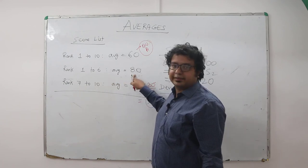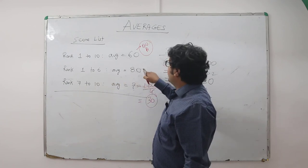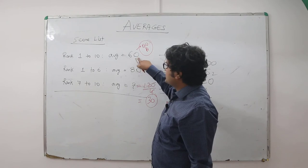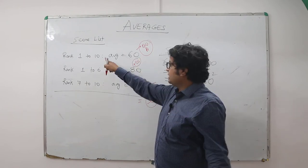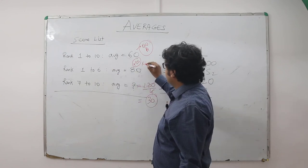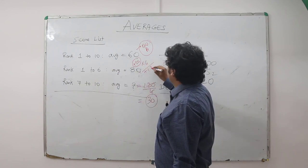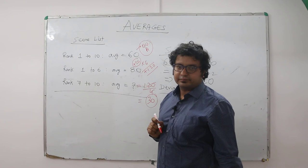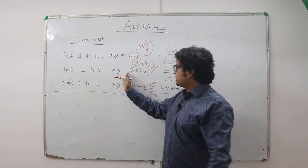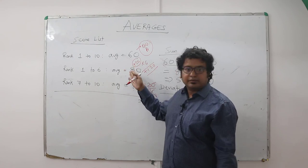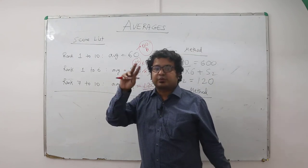1 to 6, the average is 80. Per head, per person, how much is this more? This is 20 more. And how many people are there? 1 to 6. There are 6 people. So total positive deviation is 120. Got the point? Now, deviation per head difference. Each person here, on an average, has 20 more. And 6 people are there. The net positive deviation is 120.